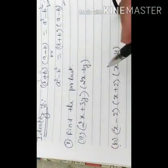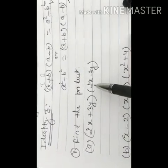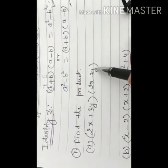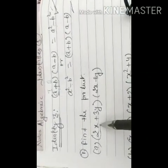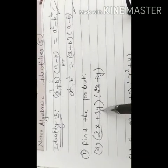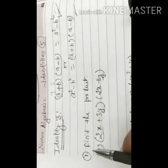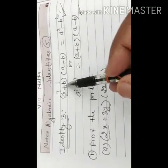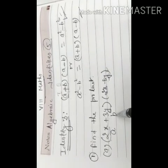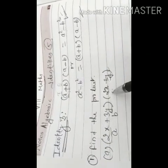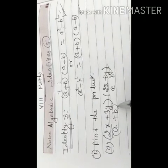Let us take two examples. The first one: find the product of (2x + 3y) into (2x − 3y). With this identity you can clearly see that the first term 2x is the same in both, and the second term 3y is the same in both — the only difference is plus and minus. So this is similar to a plus b into a minus b, where a equals 2x and b equals 3y.